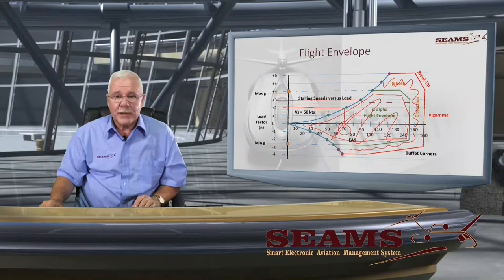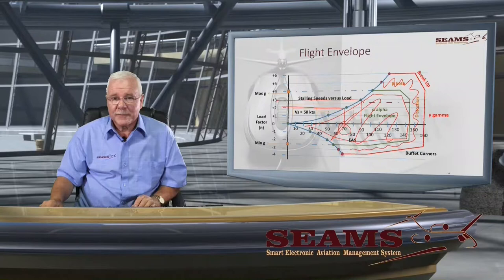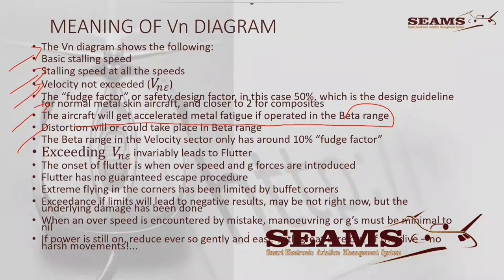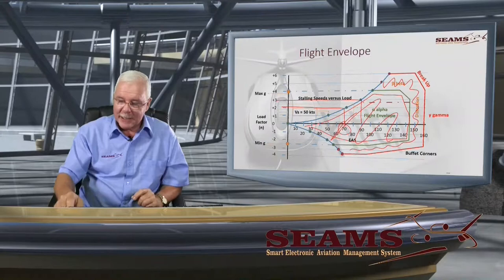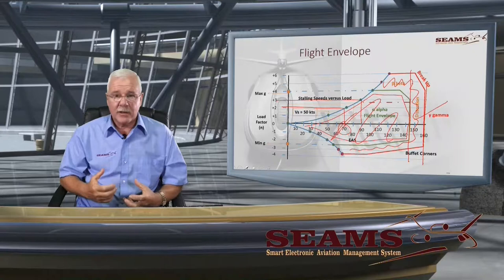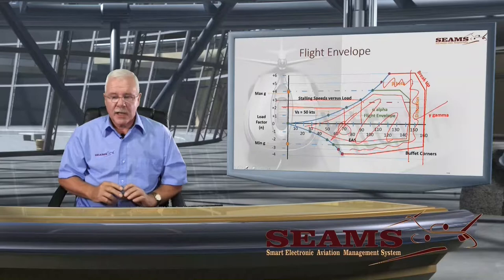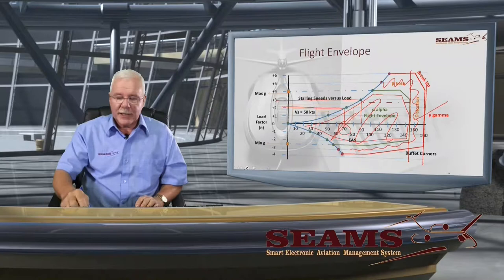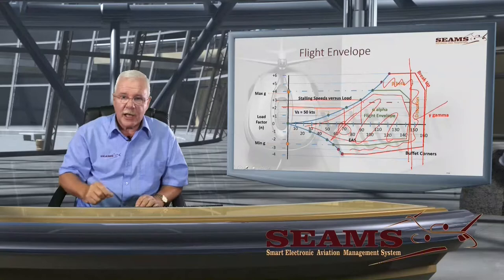We owe it to each other. Whether it's your own aircraft or not, fly it within its limits. Your five seconds of fame is not going to impress anybody except the front page of the news. The beta range in the velocity sector is only 10%, so we haven't got much margin there. This is where a lot of people have lost their lives. Once flutter sets in, it doesn't matter what you do — flutter will just increase until the aircraft literally rips itself apart. So be aware of VNE. Never cross the VNE line — you owe it to your family.